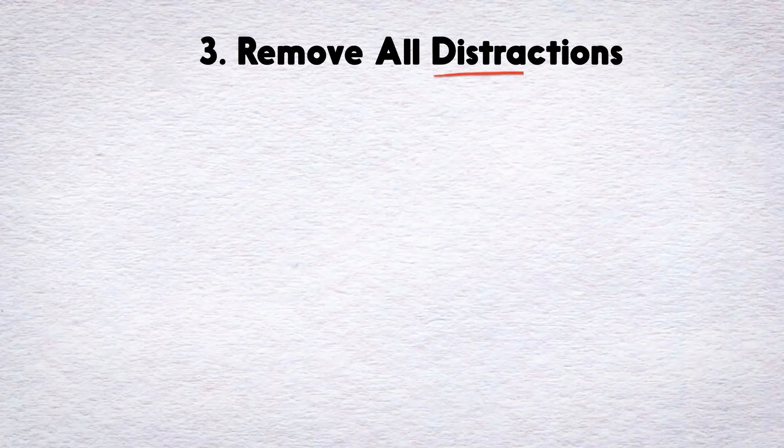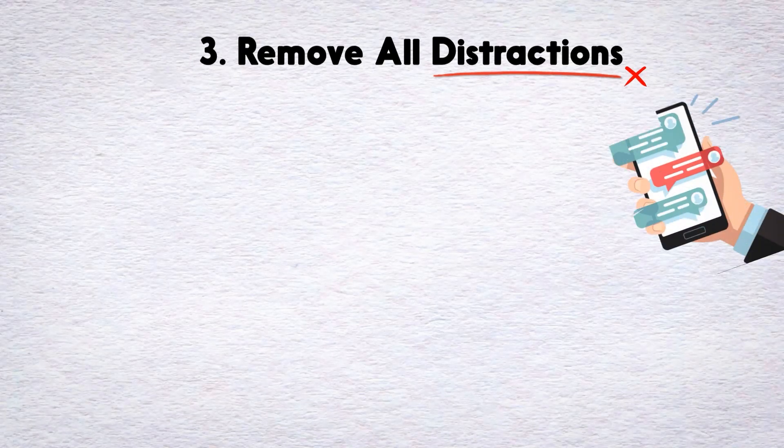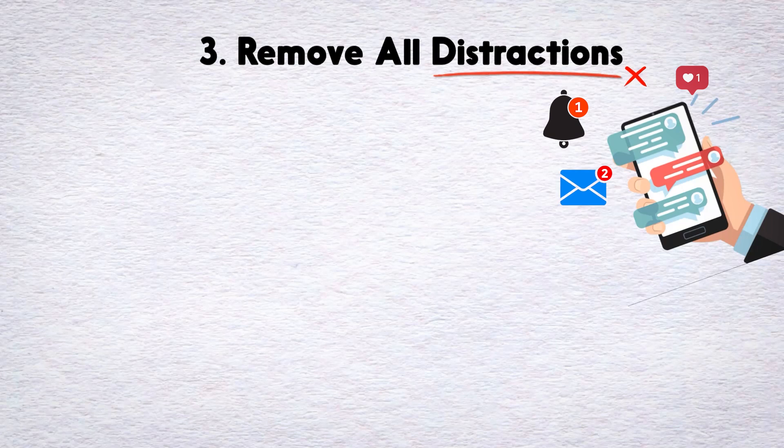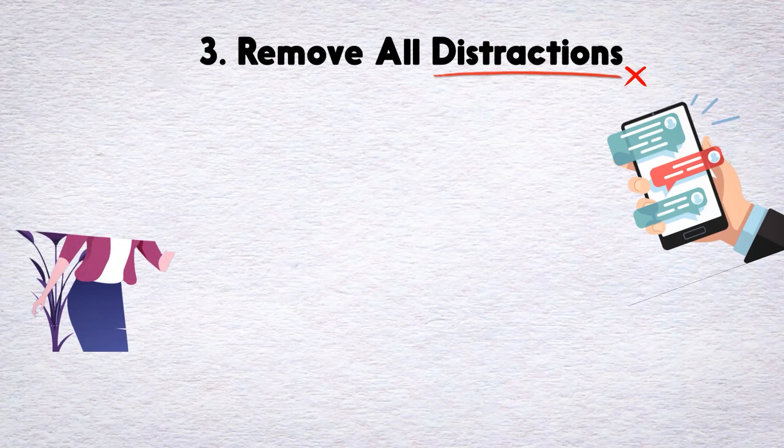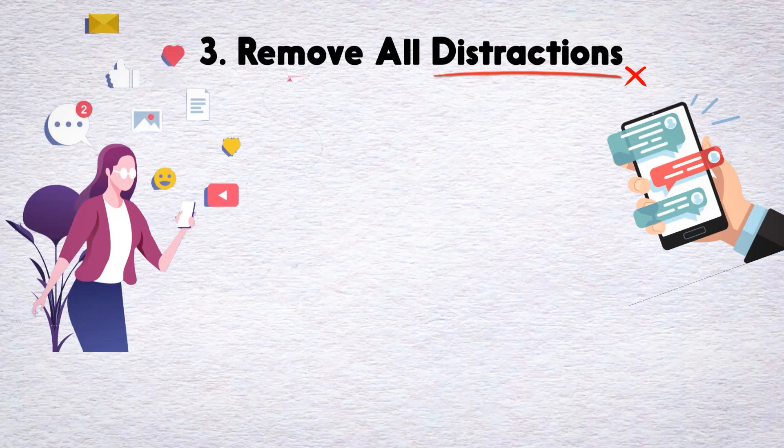Number 3. Remove All Distractions. It's hard to focus on your one thing if you're interrupted every few minutes by a ping, push notification, or text alert. Sure, these social activities are pleasurable. They give your brain a little hit of dopamine, but they can also be addictive. A quick 5 minutes on Facebook can easily turn into an hour, which will destroy your chances of working on your one thing. That's why you should proactively remove these distractions during your focused blocks of time.